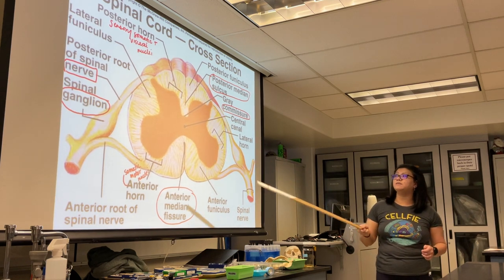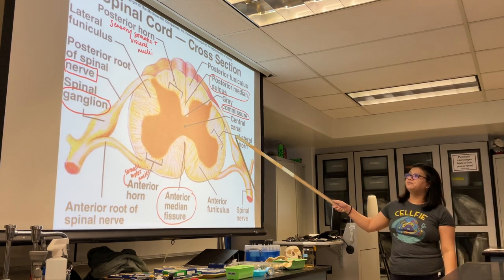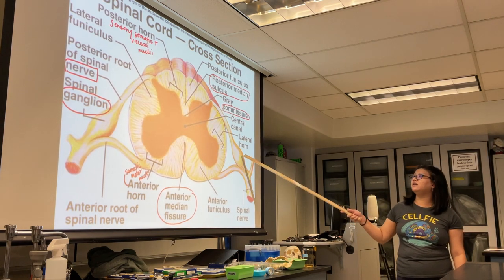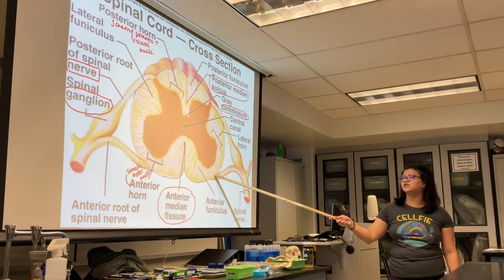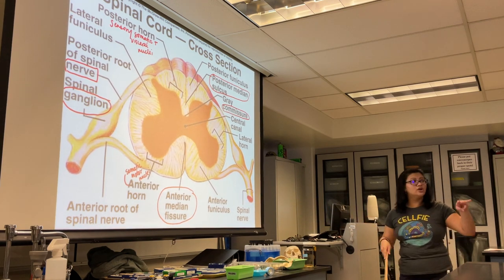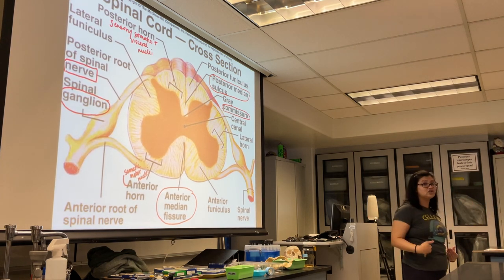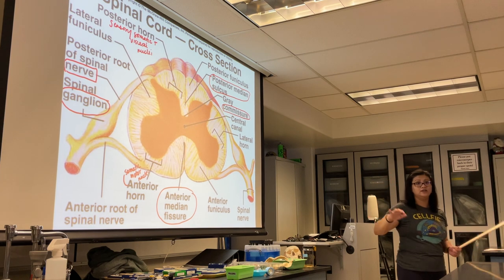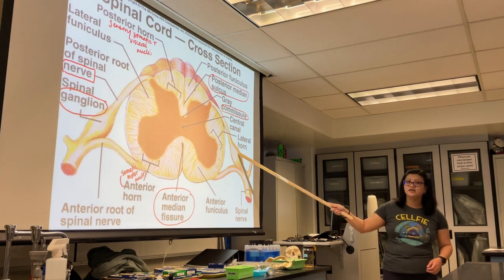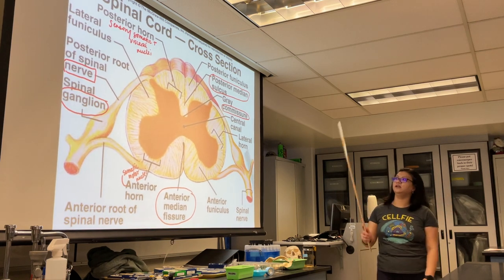Every spinal nerve has a posterior (dorsal) root with a dorsal root ganglion, and an anterior (ventral) root. The nerves connecting to the spinal cord split up — a connection in front and a connection in back. The dorsal ganglion contains cell bodies. The spinal cord is divided into left and right sides by the posterior median sulcus in the back and the anterior median fissure in the front.